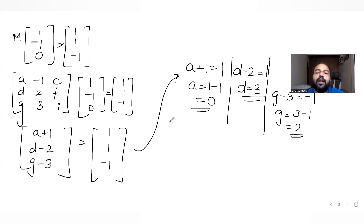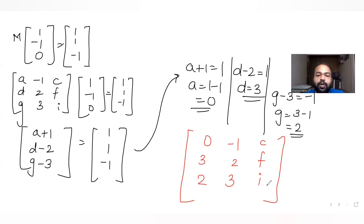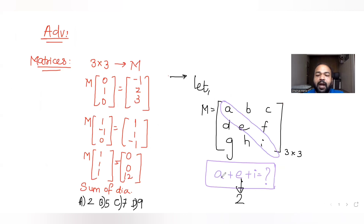So we get three more elements: a = 0, d = 3, and g = 2. Updating matrix M with all known values, out of the diagonal elements a, e, and i, we now have a = 0 and e = 2. We just need to find the value of i, so let's solve the third equation.